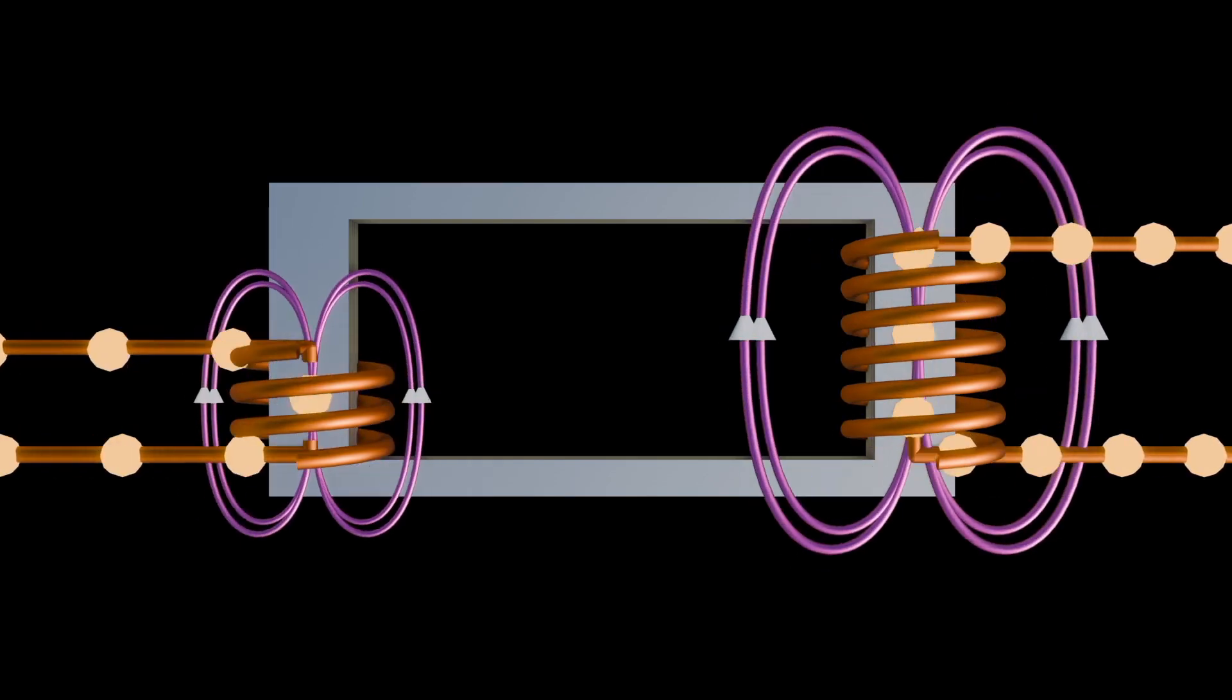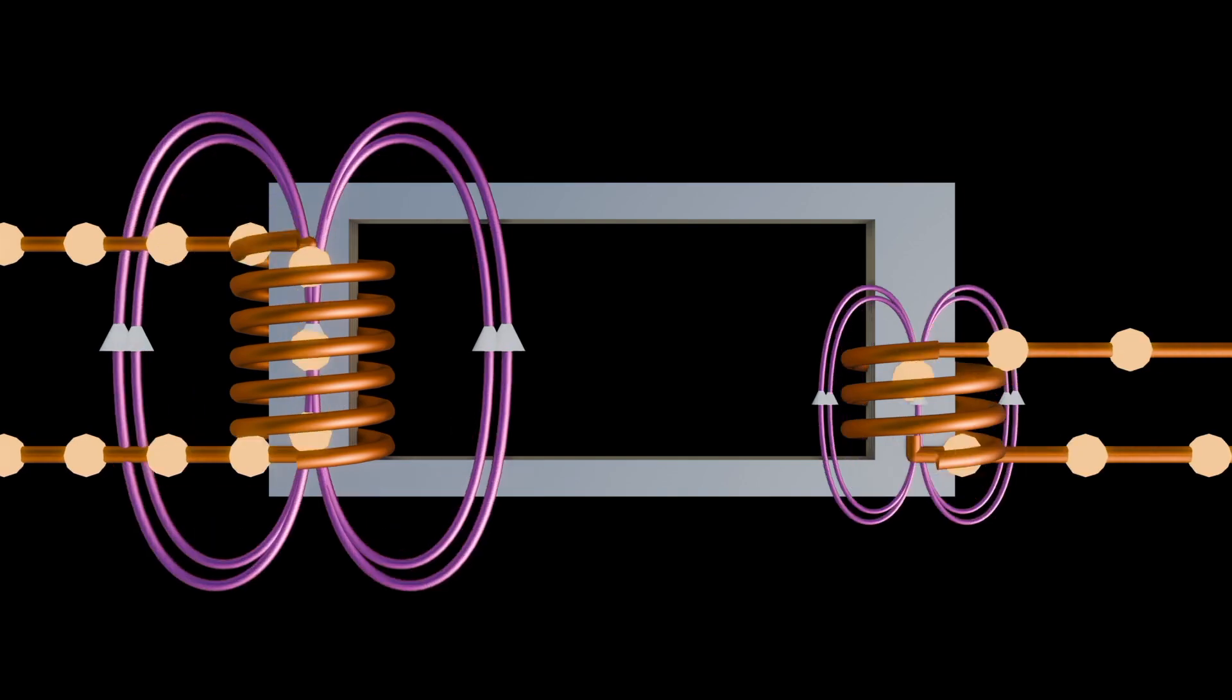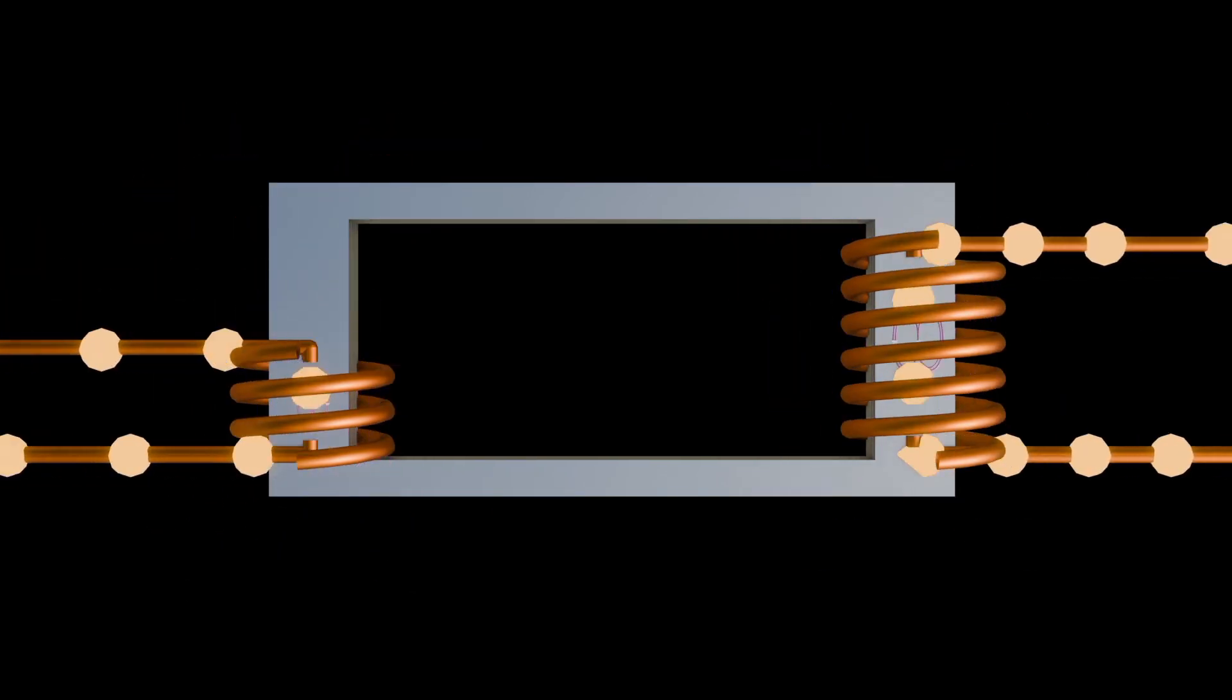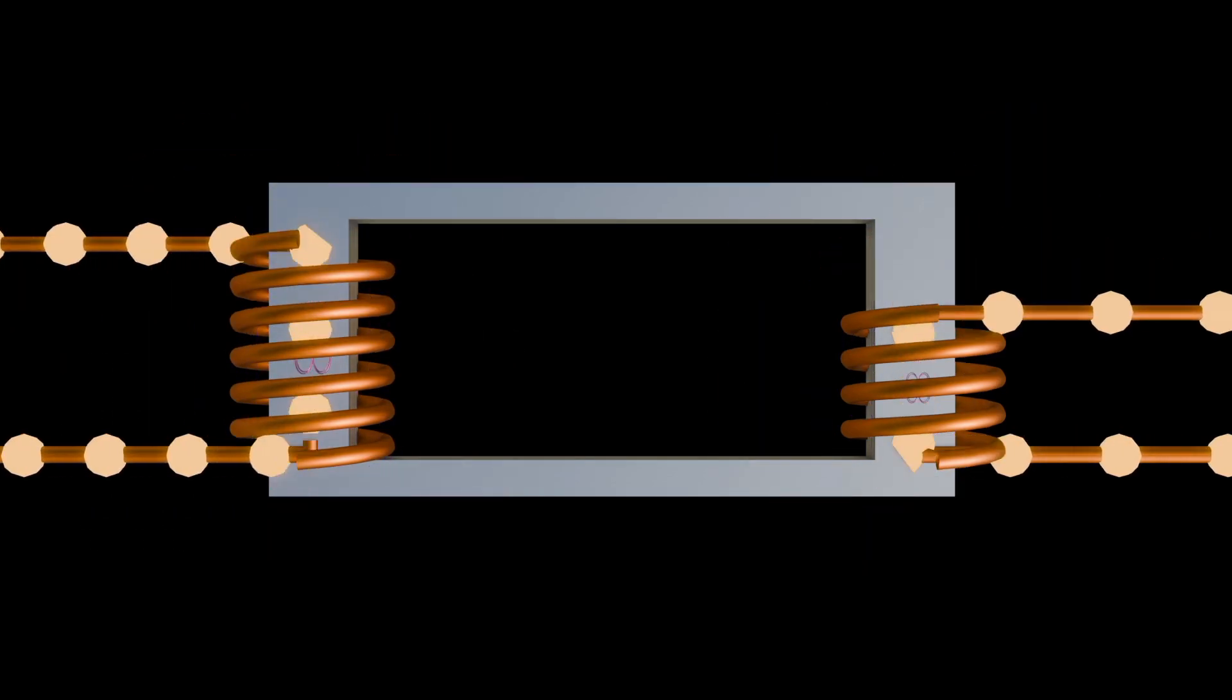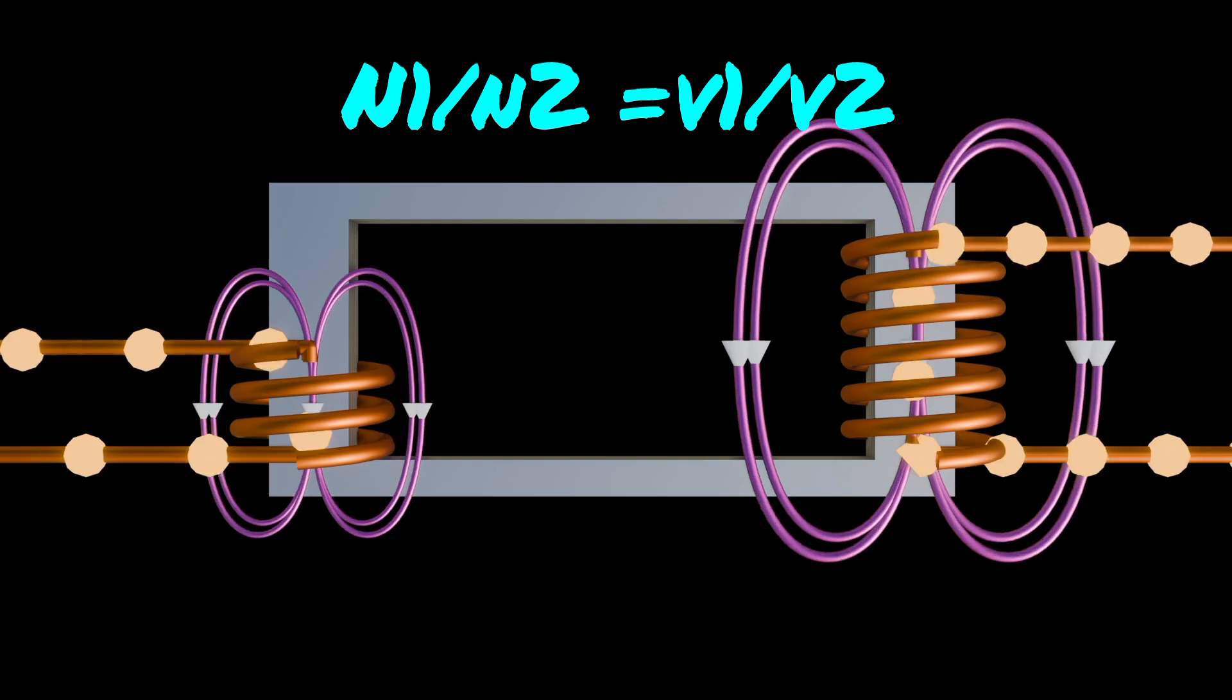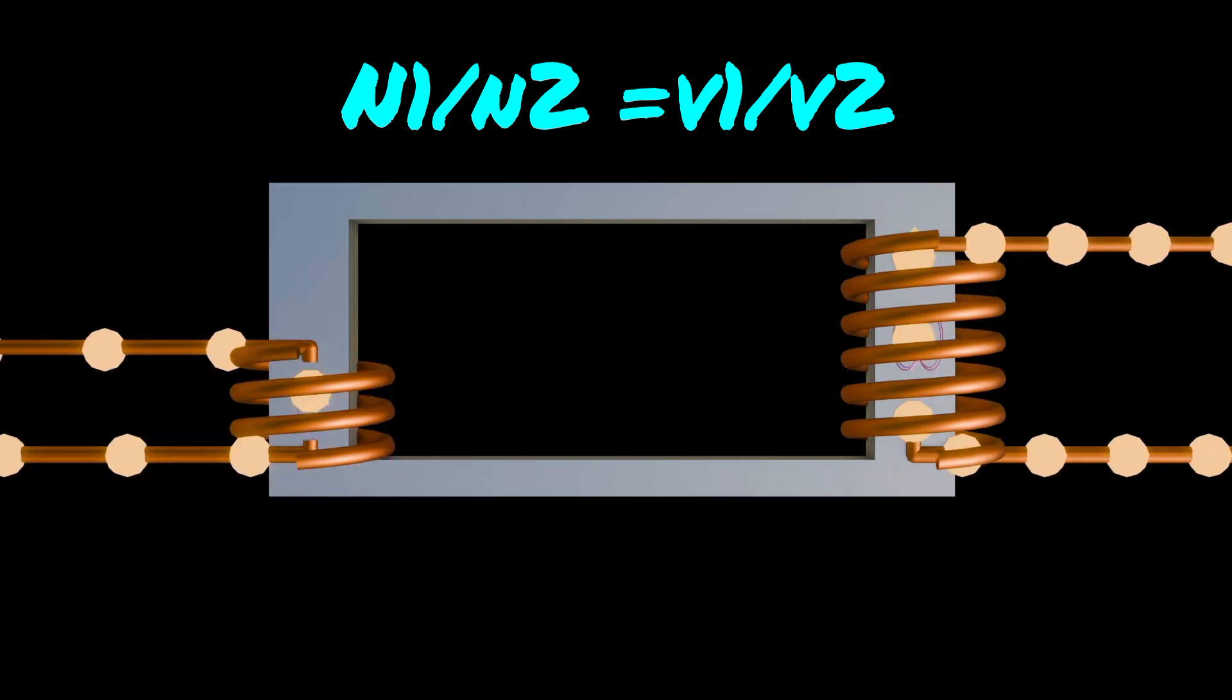Additionally, the turns ratio N1 to N2, defined as the ratio of the number of turns in the primary coils N1 to the number of turns in the secondary coil N2, is related to the voltage ratio V1 and V2. N1 over N2 is equal to V1 over V2. Hence, the turns ratio determines whether the transformer steps up or steps down the voltage.